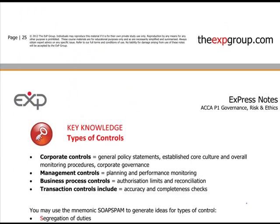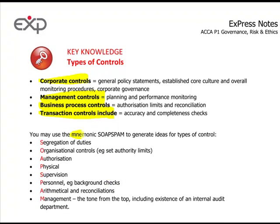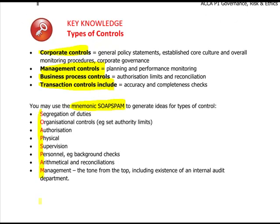Types of controls: corporate controls are general policy statements that establish core culture and overall monitoring procedures, including corporate governance. Then there are management controls covering planning and performance, business process controls, and finally transaction controls, which test for accuracy and completeness. You've also got the mnemonic SOAP SPAN, which you might remember from your accounting studies, covering those internal controls you need to learn by heart.